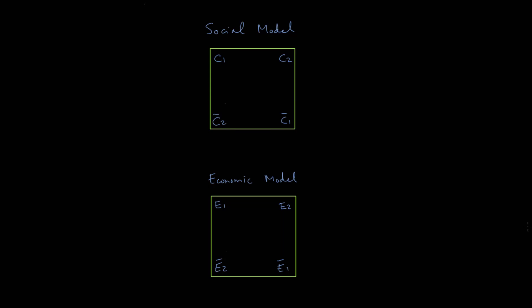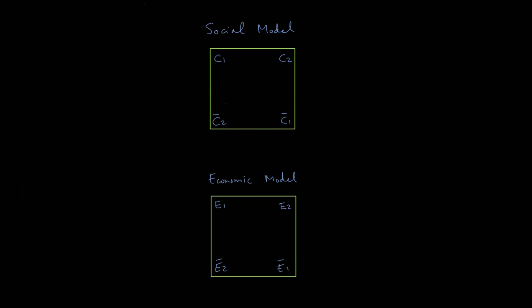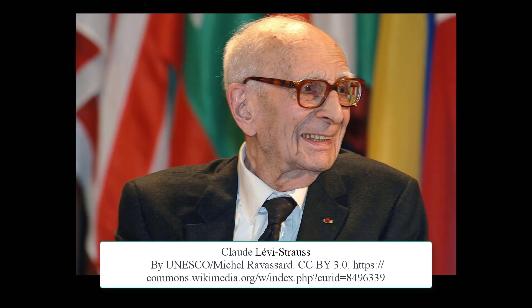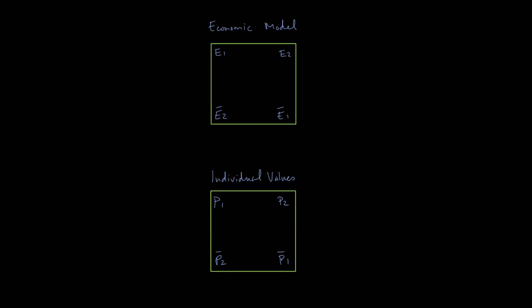In our first video on the Greimas square we looked at the basic components of the model. In this second video I want to talk about an example that Greimas gives of how you might actually start to use this heuristic — this square — in analyzing things such as literature, society, culture, myth, and so on. The example Greimas provides is really drawn from the ideas of the French anthropologist and structuralist Claude Lévi-Strauss, who talks about kinship structures within society. Greimas provides a number of different squares that work together to illustrate some of the same points.